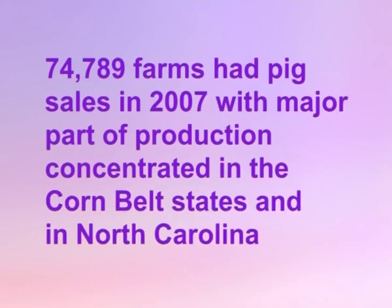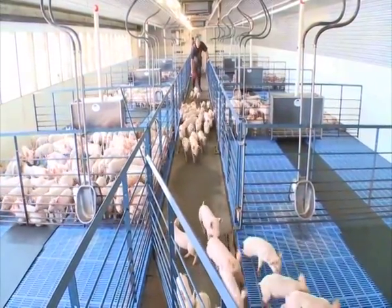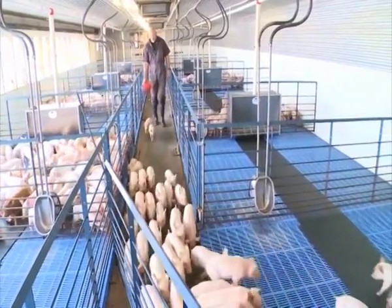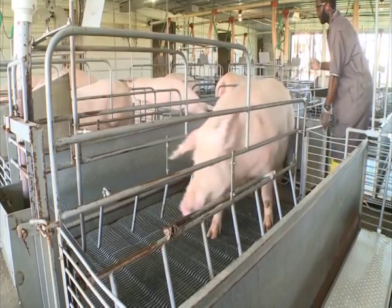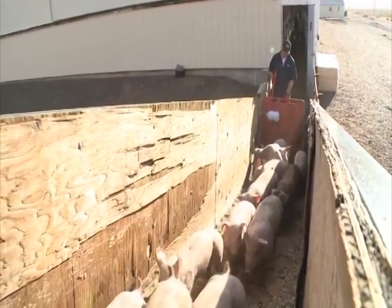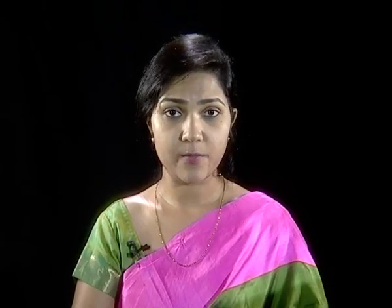Pork production is an important component of American agriculture. In 2007, 74,789 farms had pig sales, with major production concentrated in the Corn Belt states and North Carolina. In 2012, there were 60,200 hog and pig operations. Modern pork production is mostly done in enclosed buildings to protect animals from the weather, predators, and to minimize the spread of diseases. While larger operations increase efficiency with less labor, they have resulted in environmental challenges with larger amounts of manure concentrated in a small area.